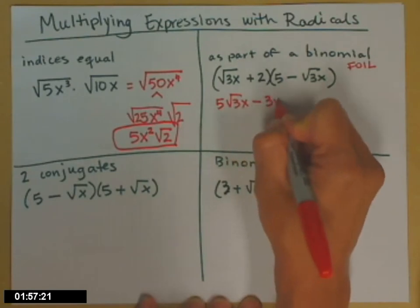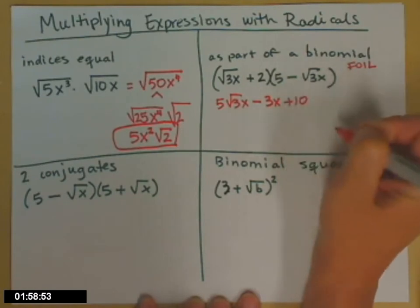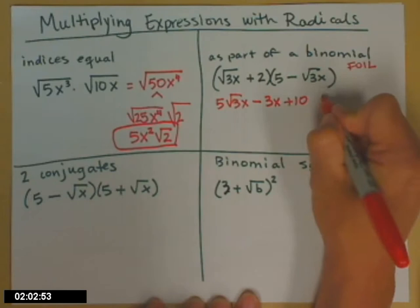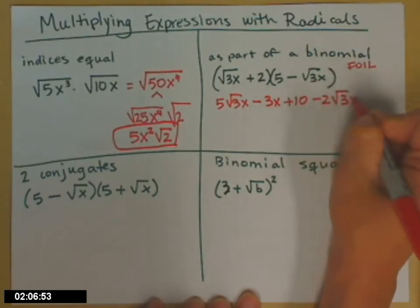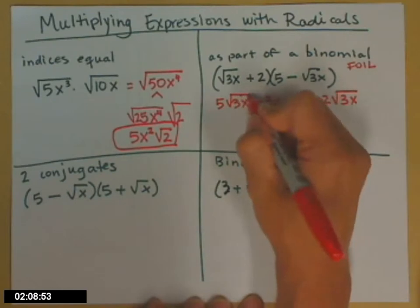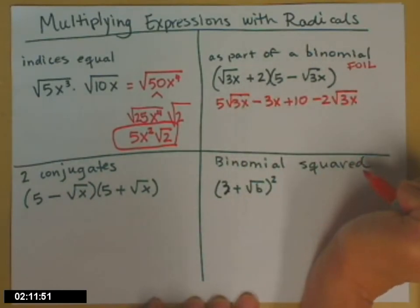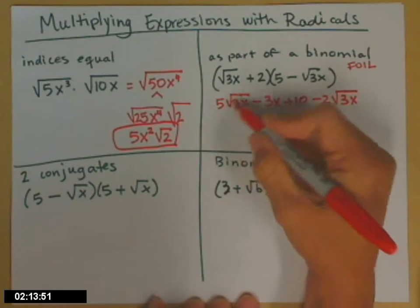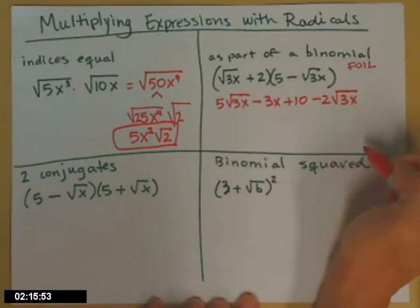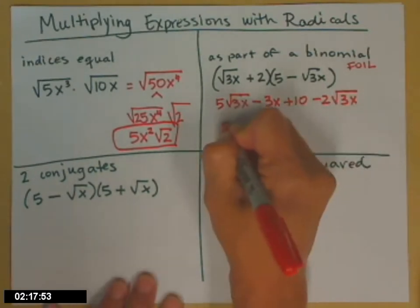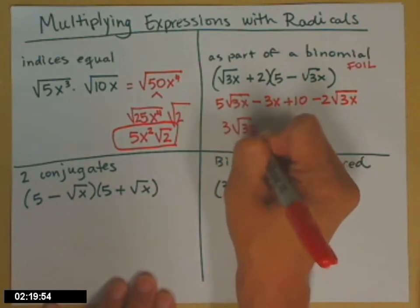So minus 3x. Both positive. Last, 2 times that square root of 3x is going to be 2 square roots of 3x and it will be negative. Now it looks like there's some tidying to do. I have a 5 square root of 3x minus 2 square roots of 3x. So that will be 3 square roots of 3x.